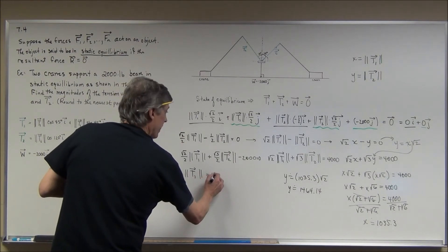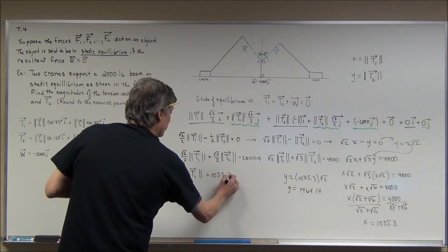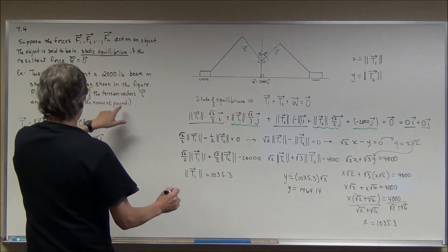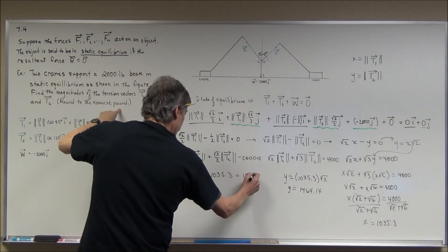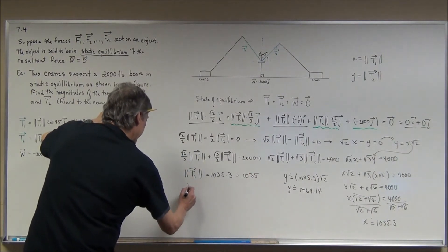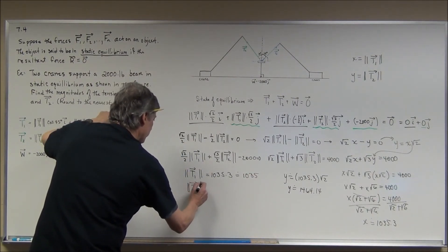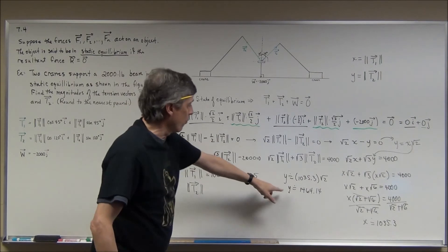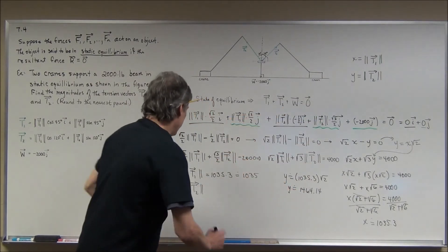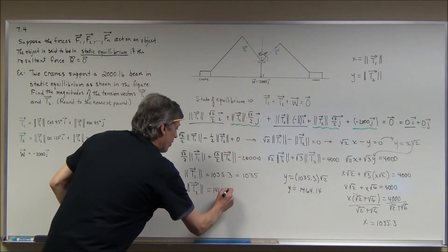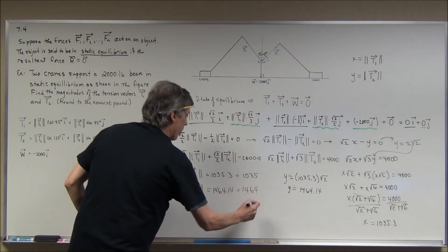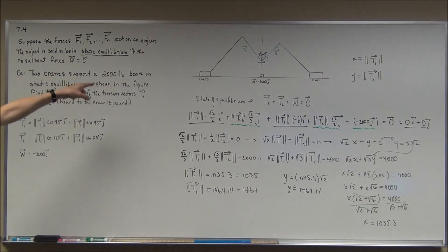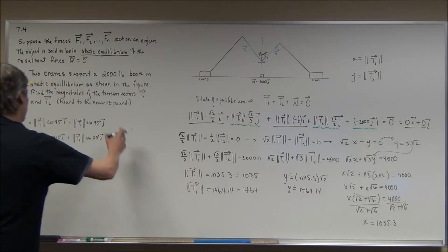To be approximately 1,035.3 — it says to the nearest pound, so we approximate this to 1,035. And the magnitude of vector T sub 2 — plugging in for y — I get 1,464.14, which is approximately 1,464, also in terms of pounds. Now I have to answer the question. I know this looks like an answer, but it's a story problem.